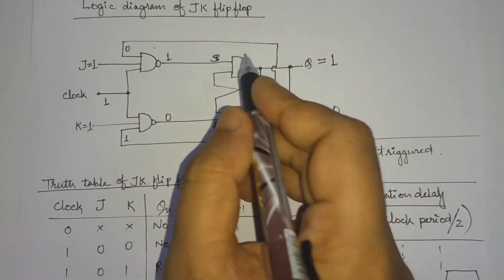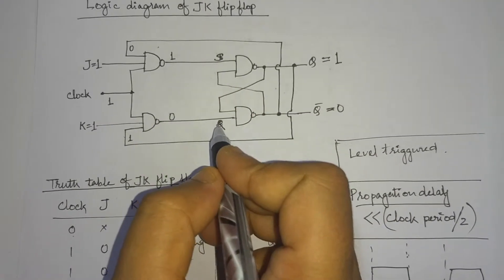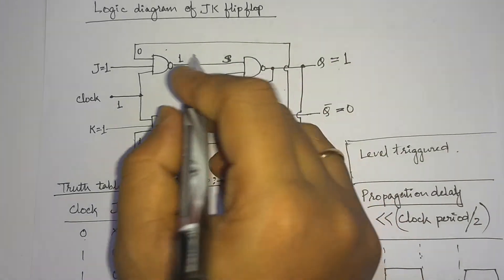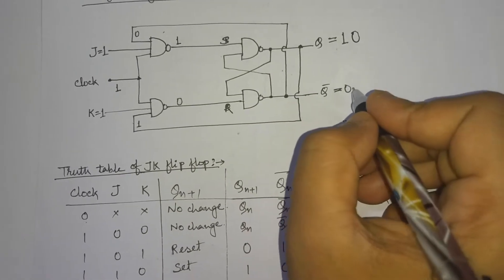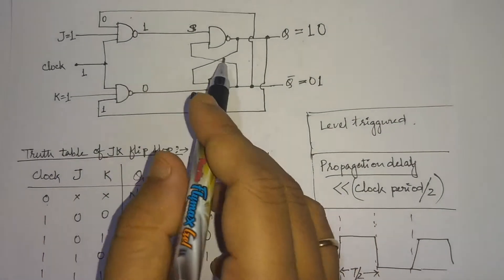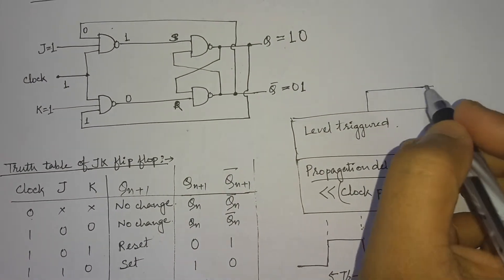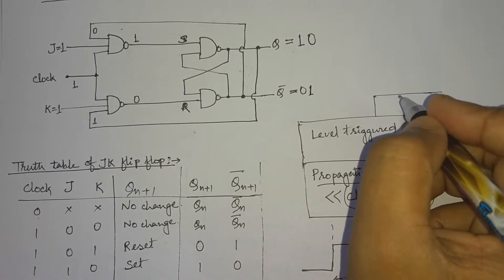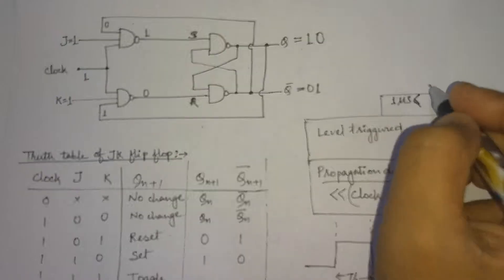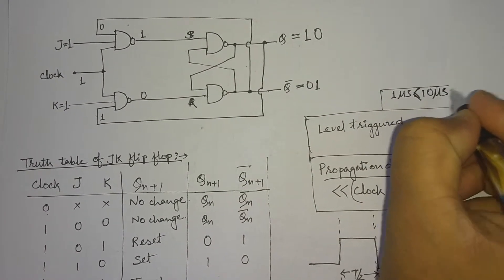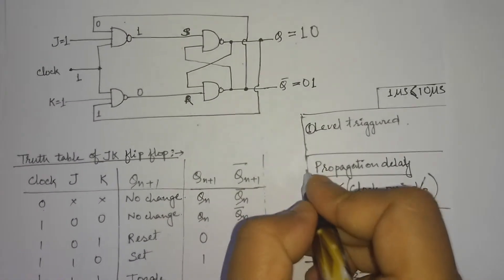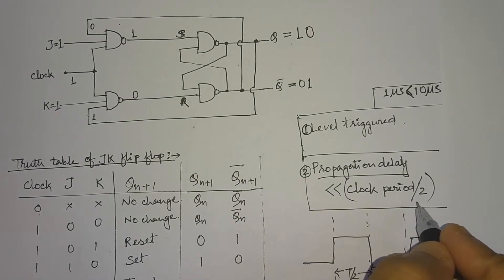We have assumed that the clock period is much higher than the propagation delay of this circuit. For example, assume the propagation delay is 1 microsecond and the clock period divided by 2 is 10 microseconds. So during the high level of the clock signal, this circuit is going to react. Within this 1 microsecond propagation delay, the output changes.